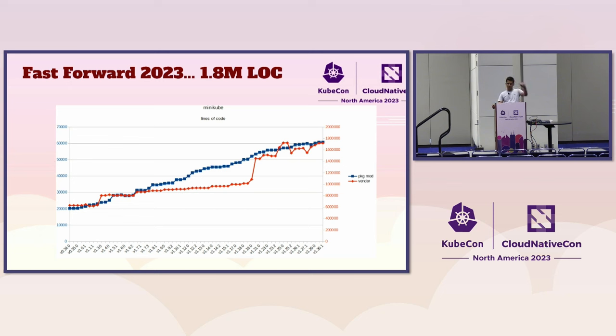Fast forward to 2023: Minikube has about 60,000 lines of native code and also 1.8 million lines of code including vendors.